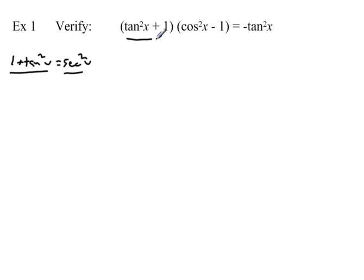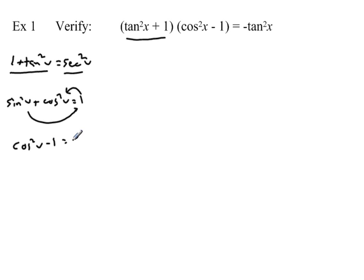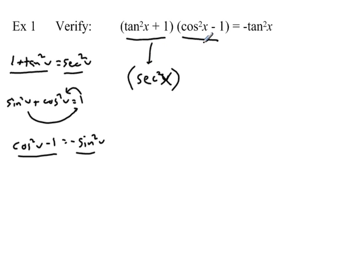Another trig identity says sine squared of u plus cosine squared of u equals one. If we subtract one and sine squared from both sides, we get cosine squared of u minus one equals negative sine squared of u. That looks like what's in the second set of parentheses. So in the first set of parentheses we can substitute secant squared of x, and in the second set, negative sine squared of x.